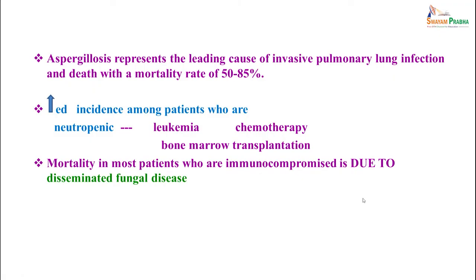Aspergillus infection causes a spectrum of diseases in humans and animals caused by members of the genus Aspergillus. It grows on dead leaves, organic matter, and decaying vegetation. Aspergillus fumigatus is the commonest cause, but A. flavus, A. terreus, and A. niger can also cause infection. It is not commonly seen in HIV infection, but is seen with neutropenia. It is the leading cause of invasive pulmonary infection with a mortality rate of 50 to 85 percent, with increased incidence in patients with leukemia, chemotherapy, or bone marrow transplantation.